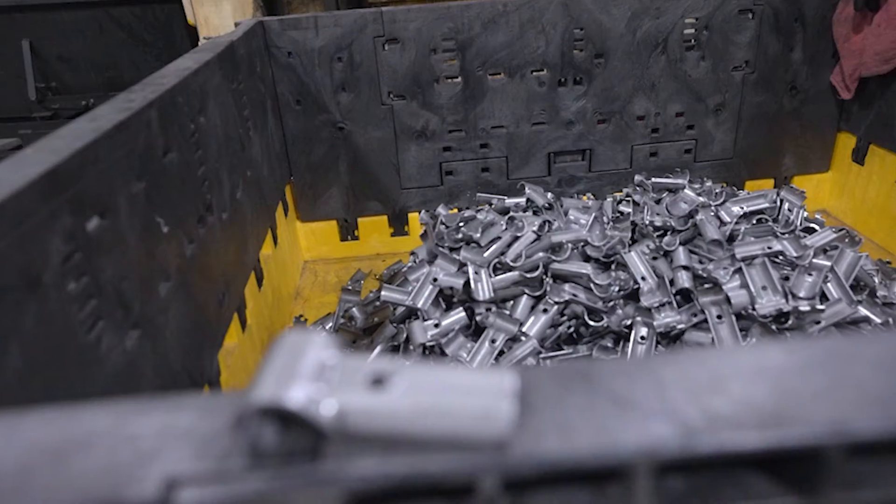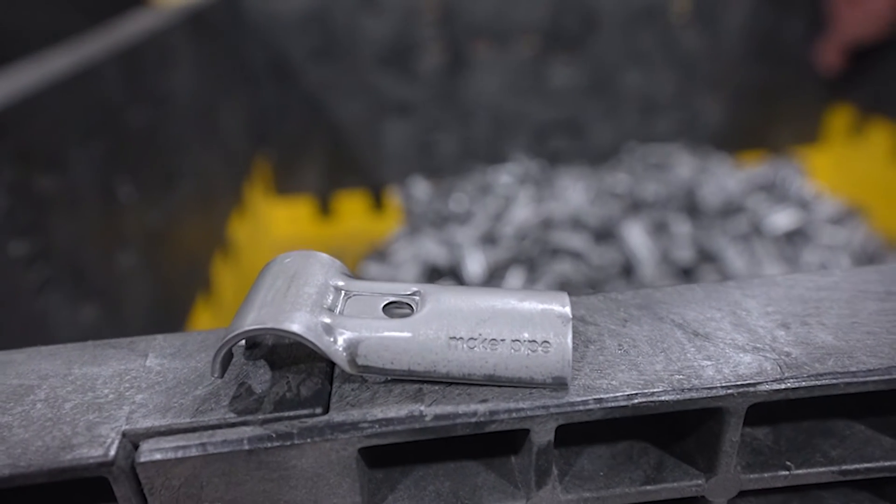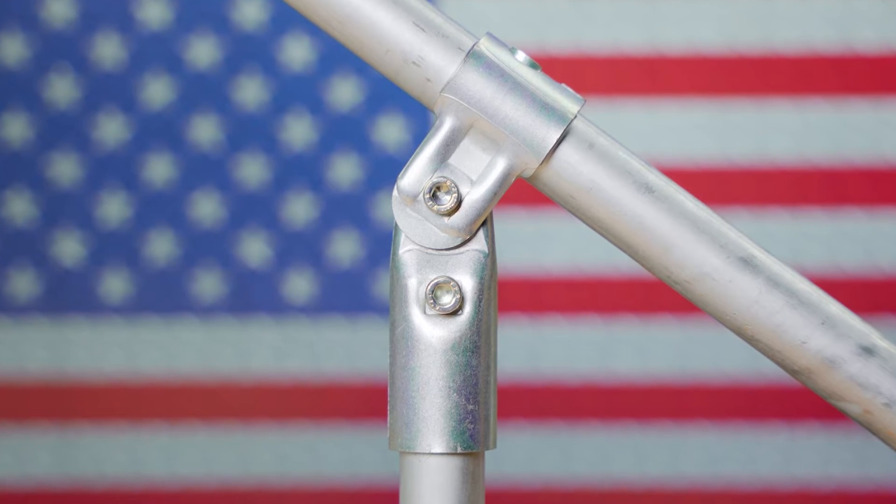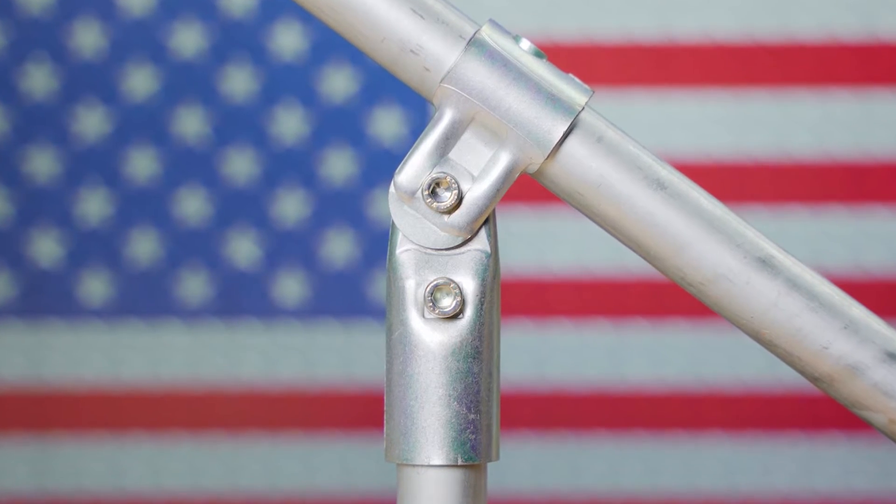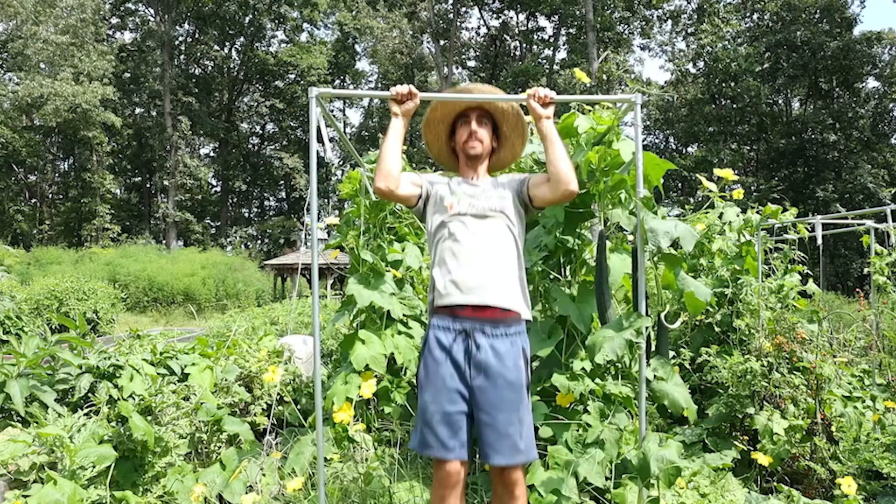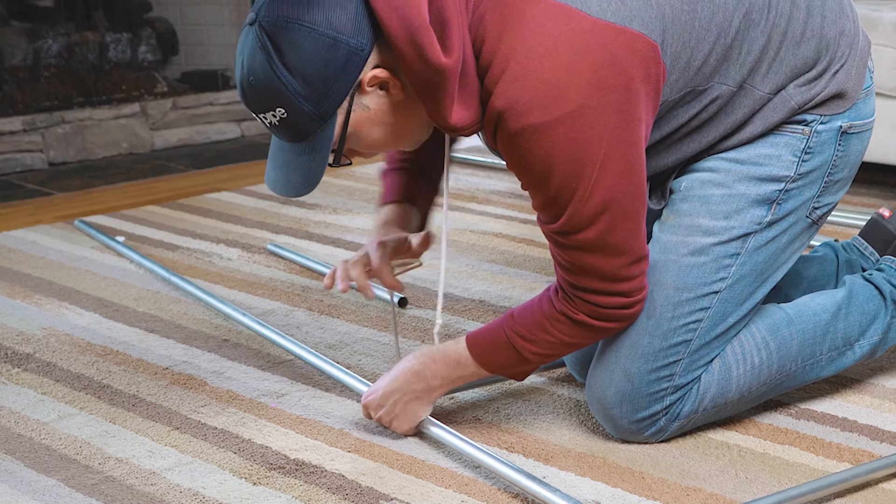All connectors in the Maker Pipe system are manufactured in our shop in upstate South Carolina. We use 12 gauge American steel and finish the parts with a zinc coating that is durable and corrosion resistant. This means you can build confidently pretty much anywhere like your garden or your living room.